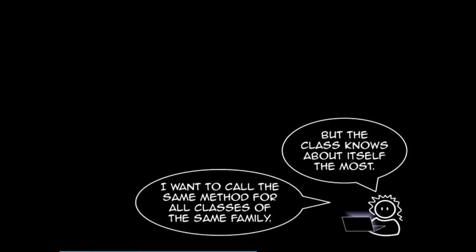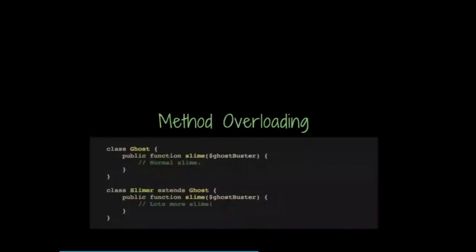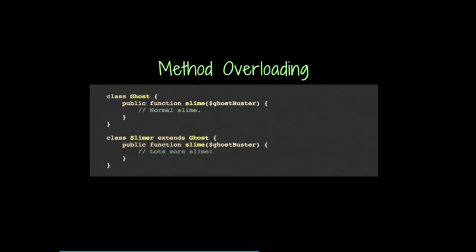What we want to do instead is assume that the class is smarter than we are — that the class knows how to handle itself. We want to just call the same method and have whatever that method is do the right thing no matter what the class is. We do that with method overloading. So we have our Ghost and Slimer class, and now they both have the same method name with the same parameters. But in the Slimer class, because it extends the Ghost class, it does more stuff — it can slime more. Now we only need to know we're operating on any random ghost object and tell it to go slime some ghostbusters, and it will do it appropriately for its own class.